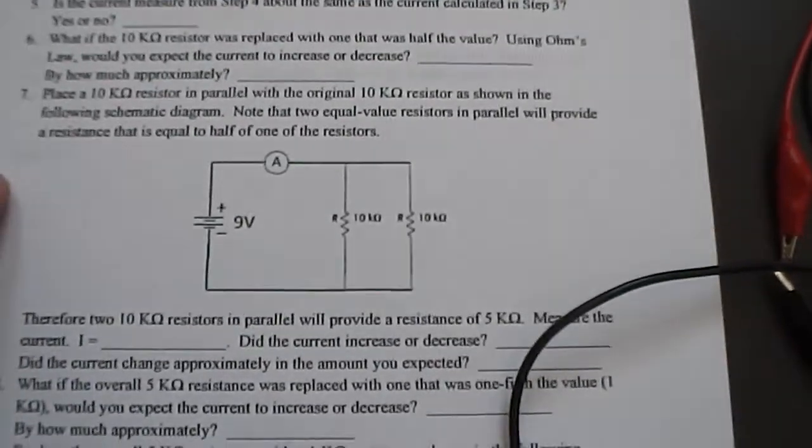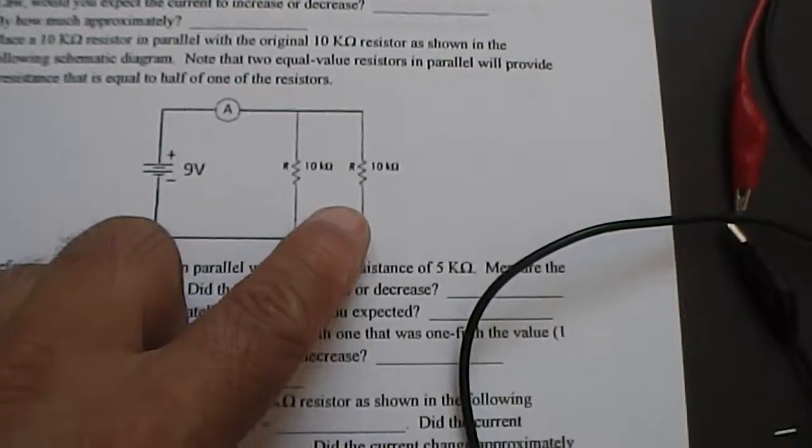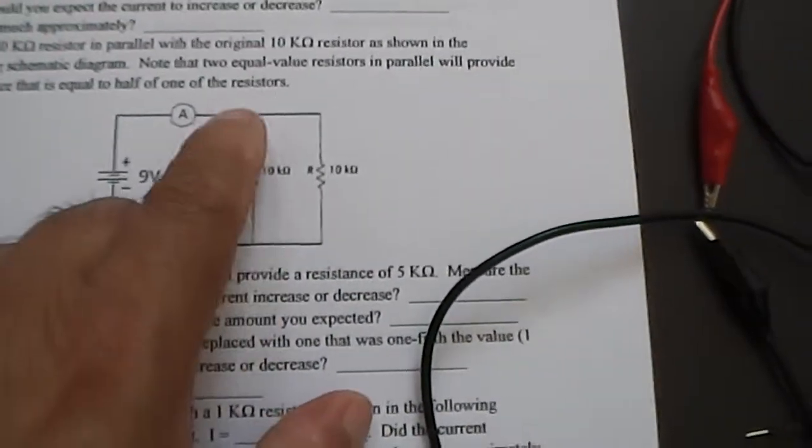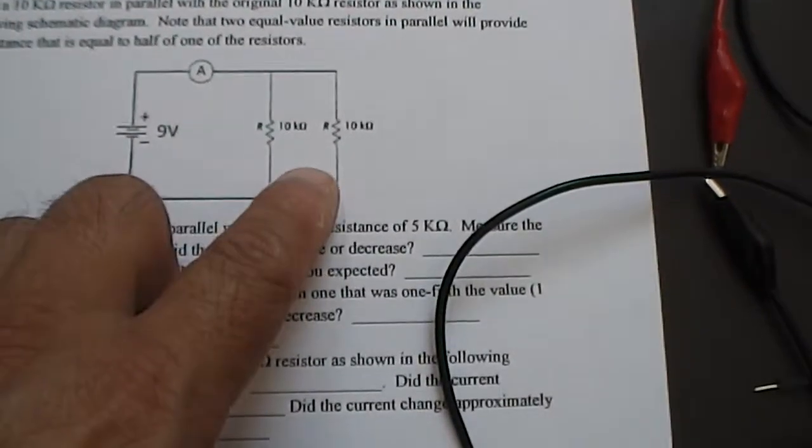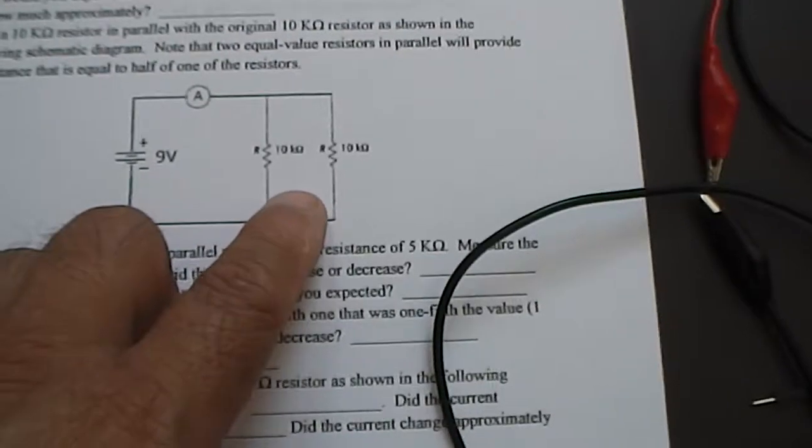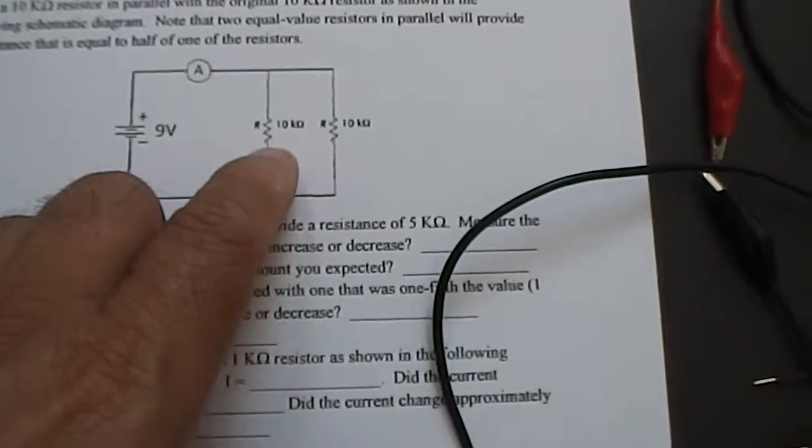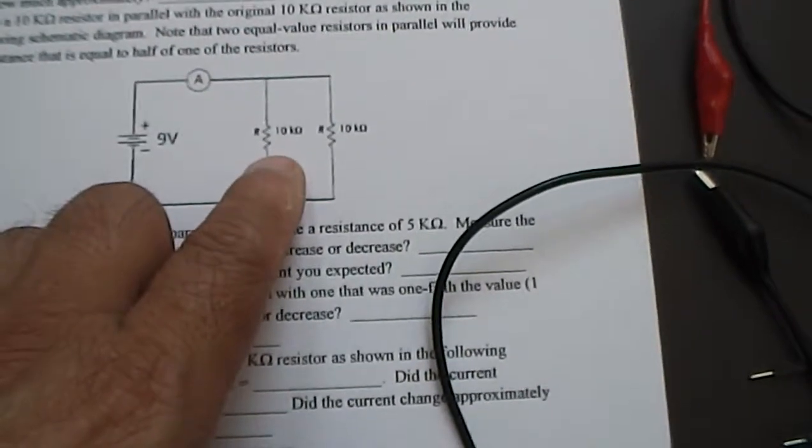Now, in step seven, we can see that we have another 10k ohm value resistance, but these two are in parallel. You can see that the top ends of the resistors are connected to each other, and the bottom ends are connected to each other. When that happens, that means that those two components are in parallel. Now the one thing is, when you put two resistances in parallel, you're going to get a lesser resistance.